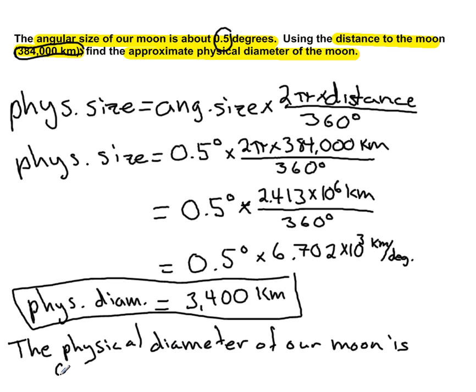The physical diameter of our moon is about 3,400 kilometers. It's done.